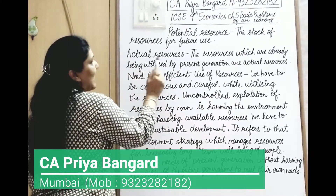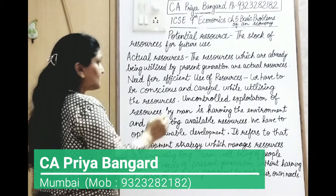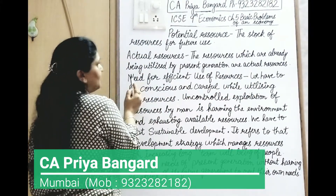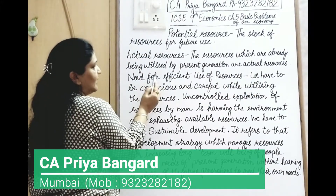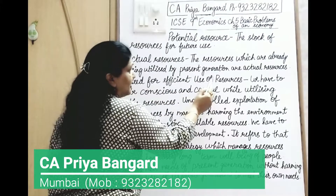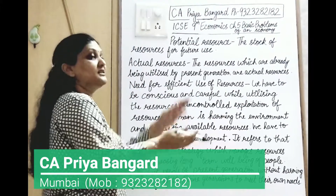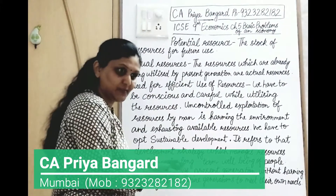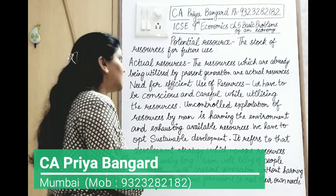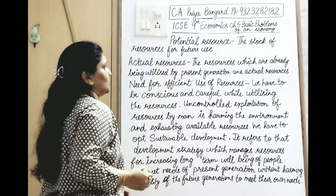Now, what do you mean by Actual Resources? The resources which are already being utilized by the present generation are Actual Resources. Means there are resources present and the actual generation is using them — they are Actual Resources.